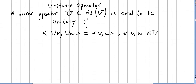A linear operator U in the general linear group of a space V is said to be unitary if the inner product ⟨Uv, Uw⟩ equals ⟨v, w⟩ for all v and w in the vector space.